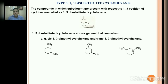In the trans isomer, this methyl is up and this methyl is down — they are on opposite sides. That's why this isomer is called trans-1,3-dimethylcyclohexane. So remember, 1,3-disubstituted cyclohexane shows geometrical isomerism: cis-1,3-dimethylcyclohexane and trans-1,3-dimethylcyclohexane.